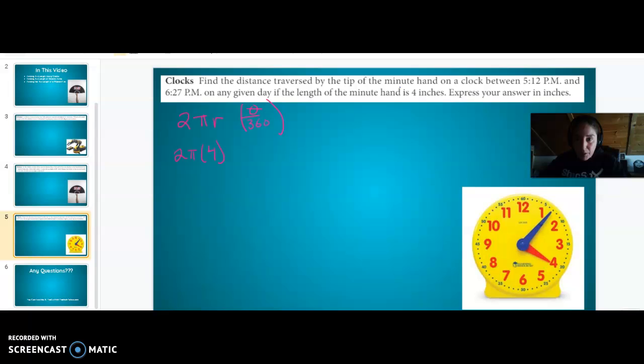It goes from 5:12 PM, and we only care about the minute hand. So 12 is about right here. 27 is here. However, it doesn't just go from 5:12 PM to 5:27 PM, it goes from 5:12 PM to 6:27 PM. Which means the minute hand is going to start here, it's going to go all the way around, and then it's going to keep going until it hits here a second time.